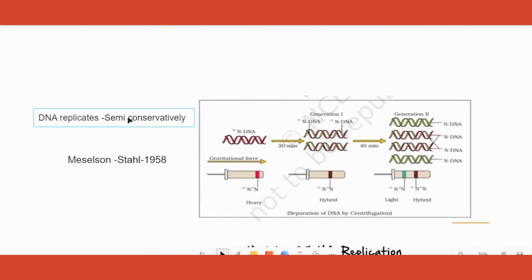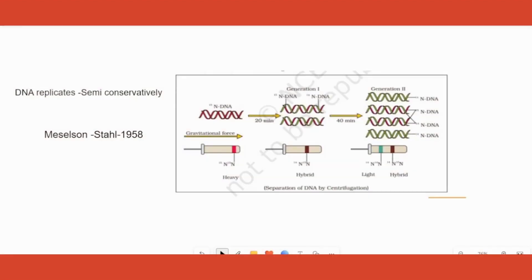Let's understand how Meselson and Stahl proved it. To prove that DNA replicates semi-conservatively, they grew some bacteria called E. coli bacteria on a particular medium. Whenever a bacteria is growing on a medium, it will try to incorporate the contents of the medium into its parts, including its DNA.